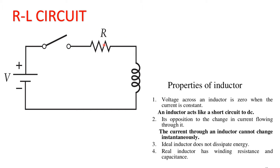The resistor controls the flow of current. An inductor acts like a short circuit in DC. If we have DC, the inductor is a short circuit.